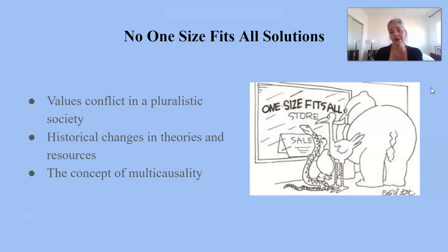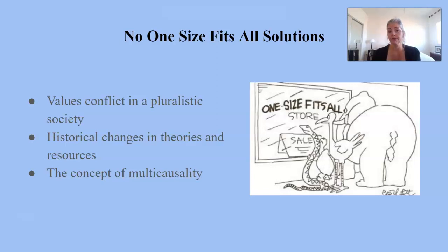It's important to understand that there is no one-size-fits-all solution. There's not a universal solution because circumstances are complex. People are complex, especially in a pluralistic society where we have very different and sometimes divergent value systems. Those can be influenced by our own experiences, our families, our cultures. We value different things. How we view the world may differ distinctly from one family and one person to the next.